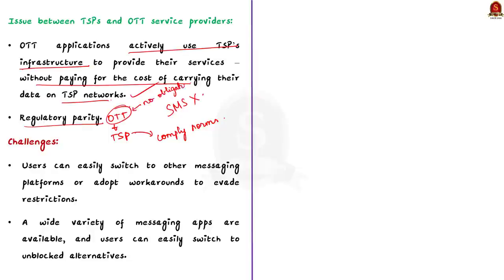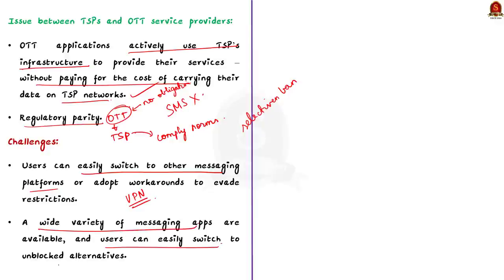The Cellular Operators Association of India has asked the government to bring messaging services under a regulated license, which would allow the government to shut off access to messaging apps selectively instead of shutting down the entire internet. But there are challenges in placing selective bans. Firstly, users can easily switch messaging platforms or adopt virtual private networks (VPNs) to evade the restrictions, so the proliferation of alternative platforms and technologies poses a serious challenge. Secondly, a wide variety of messaging apps are available and users can easily switch to unblocked alternatives. These are some of the challenges in placing selective bans.